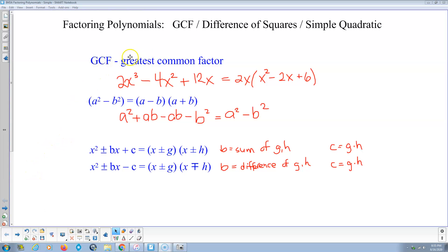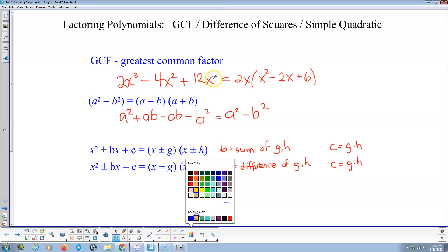Okay, just a quick review of greatest common factor. Notice this is 2 times x times x times x. This is negative 1 times 2 times 2 times x times x. And 12x is 2 times 2 times 3 times x. So what's common? The 2 for coefficients, and x is common. So we divide that out. 2x goes into everybody, and what we have left is x squared minus 2x plus 6.